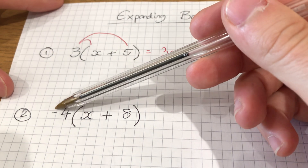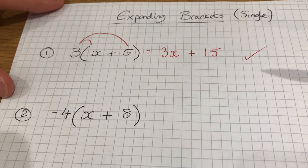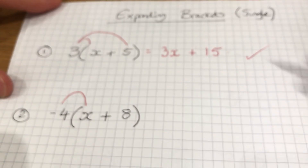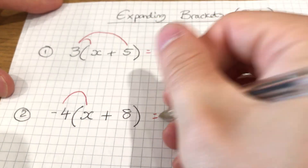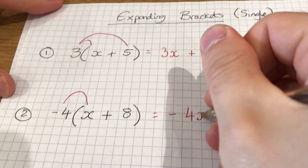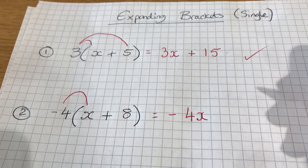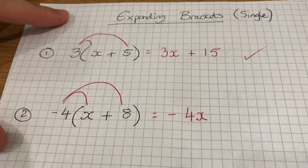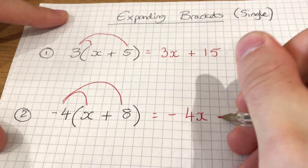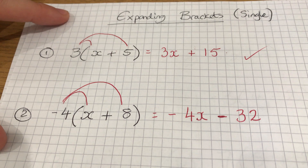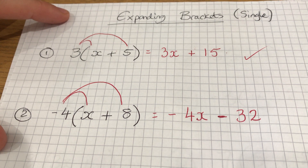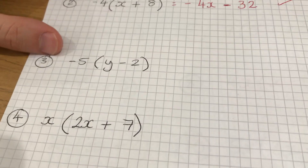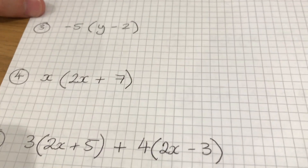Getting a little bit harder — there's a negative on the outside, but other than that it's exactly the same. We're going to do negative 4 times x, which is negative 4x. Then negative 4 times 8: a negative times a positive is a negative again. 4 times 8 is 32, so the answer is negative 4x minus 32.